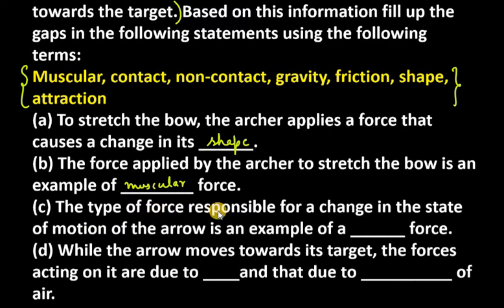Next is, the type of force responsible for a change in the state of motion of the arrow is an example of, is it contact force, non-contact force or gravitational force. So basically, it is contact force. क्योंकि दोनों के बीच में कुछ contact है. Arrow के और hand के बीच में कुछ contact है, तो इस वजह से इसको contact force बोलेंगे.